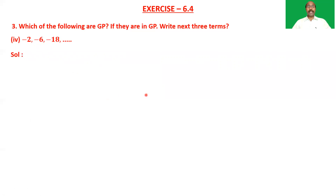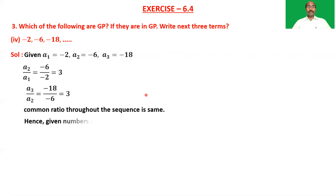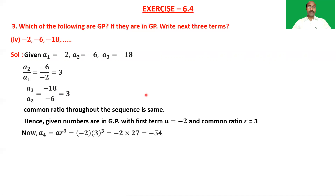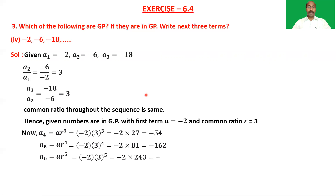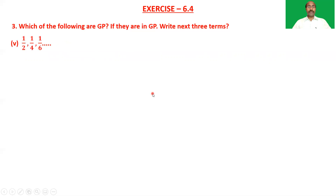Fourth sequence: −2, −6, −18, and so on. The terms are in GP and the next three terms are −54, −162, and −486.